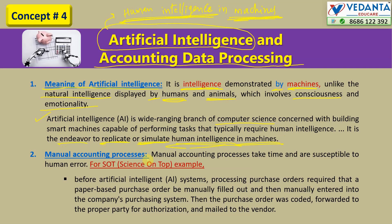Before the introduction of Artificial Intelligence, manual accounting processes took time and were susceptible to human error. For example, processing a purchase order required that a paper-based purchase order be manually filled out and then manually entered into the company's purchasing system. The purchase order was then coded, forwarded to the proper party for authorization, and sent manually to the vendor.